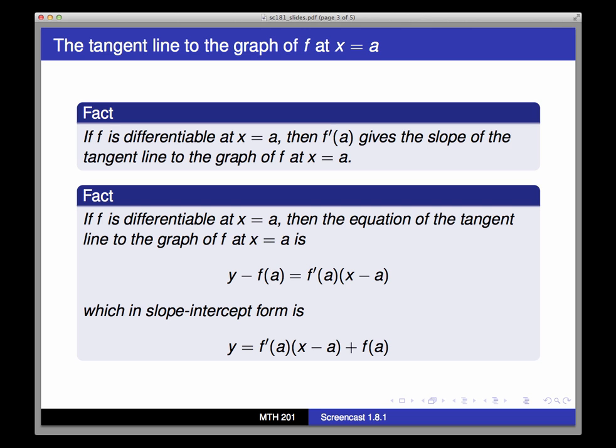So we can use the point-slope form for the equation of a line to write the equation of the tangent line, which gives us the tangent line itself. Solving for y would just give us y equals f prime of a times x minus a plus f of a. This is just the equation for the tangent line to the graph of f at x equals a in slope-intercept form.